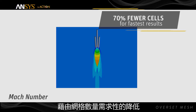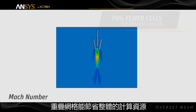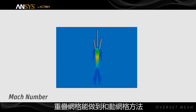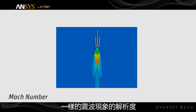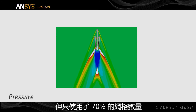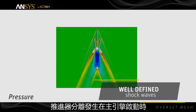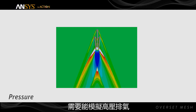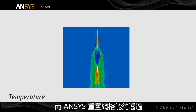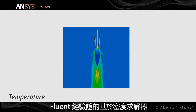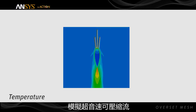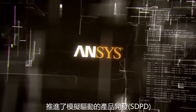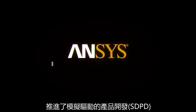Overset mesh can reduce overall computing resources by requiring fewer cells to create the simulation. In this example, overset provided equivalent shock resolution to the moving deforming mesh method while using 70% fewer cells. Booster separation occurs during main engine on, requiring the ability to model the highly compressible exhaust plume. The ANSYS Overset simulates hypersonic compressible flow using Fluent's proven density-based solver, advancing simulation-driven product development.